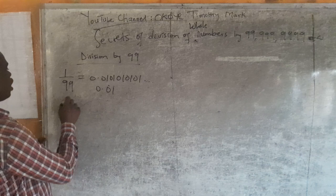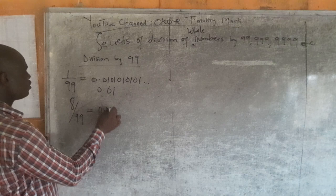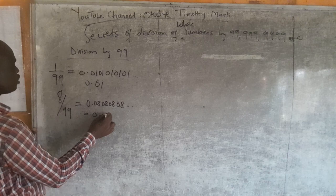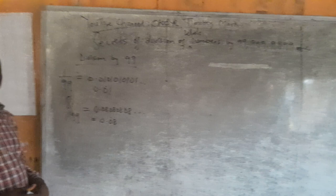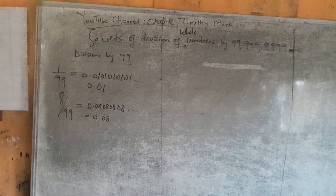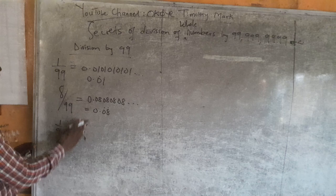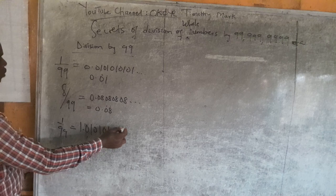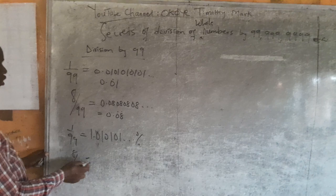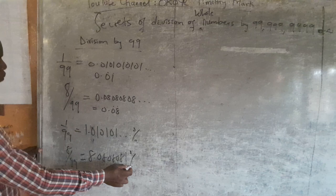So if I have 8 over 99, no problem — it is 0.08, 08, 08, repeated. Why the two decimal places? Because 99 has two digits. By logic, 1 over 99 is approximately 1%, and 8 over 99 is approximately 8% — that is my approximation.